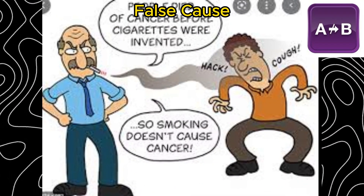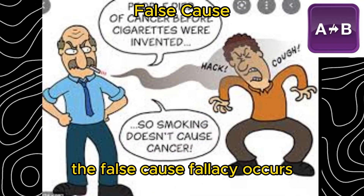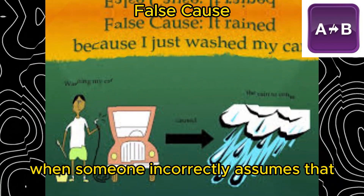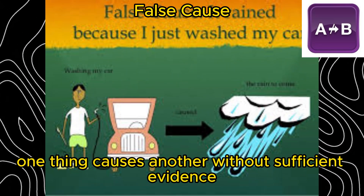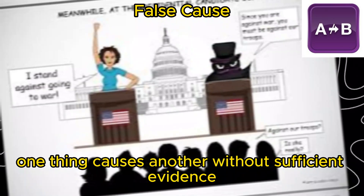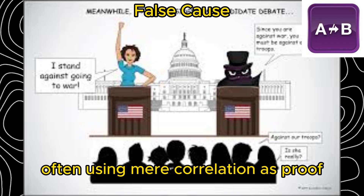False cause. The false cause fallacy occurs when someone incorrectly assumes that one thing causes another without sufficient evidence, often using mere correlation as proof.